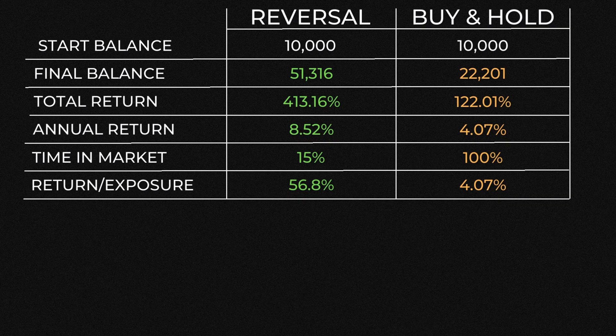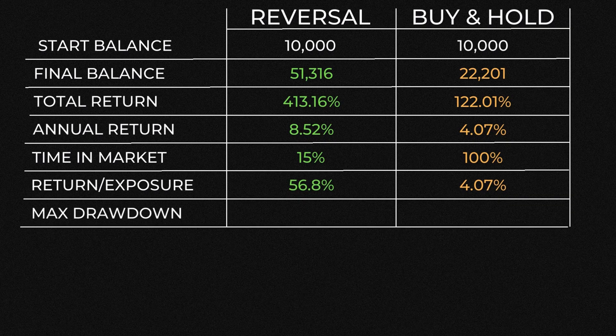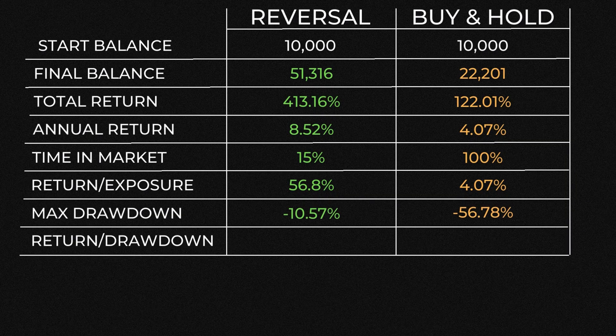The next important metric to consider is drawdown. It's great to look at the potential profits, but it's equally, if not more important, to look at the potential downside. The worst drawdown for buy and hold was almost 57%, which would be mentally very difficult to continue holding. By contrast, this reversal strategy had a maximum drawdown of just over 10.5%, much less than buy and hold. I then took the annualized return and the max drawdown to calculate a metric called return over drawdown, which compares the upside against the downside.